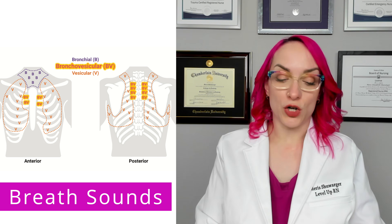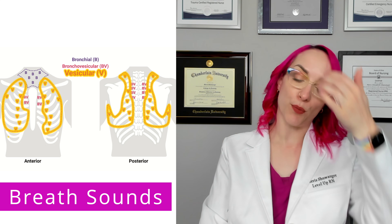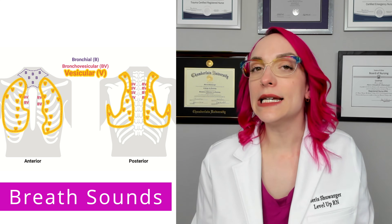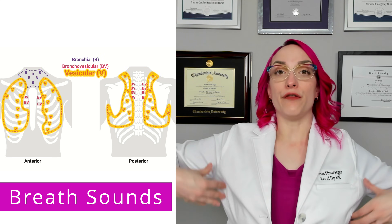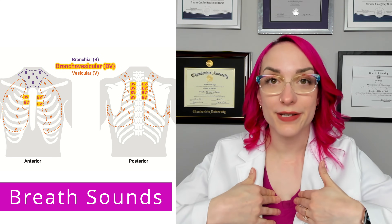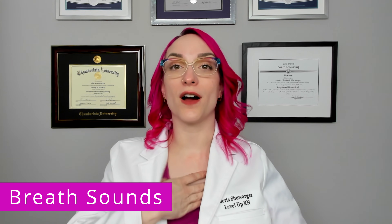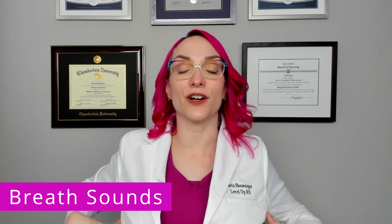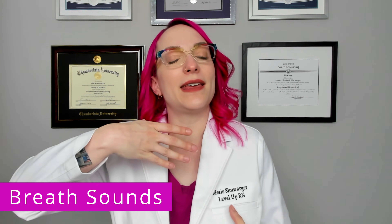Contrast this with vesicular sounds, which are going to be heard specifically over the peripheral lungs, and these are going to be quiet, low-pitched sounds. Think of it as going in ABC order — bronchial, bronchovesicular, vesicular. And remember, bronchovesicular is a mix of the bronchial and vesicular sounds, so you would expect it where the lungs and trachea come together, which is through the bronchi.